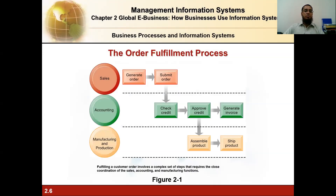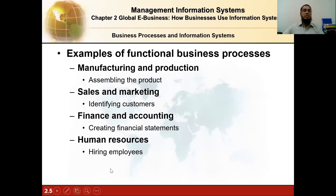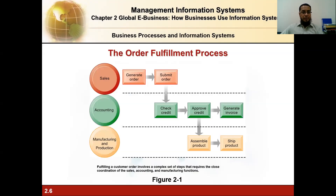In figure 2.1, fulfilling a customer order involves a complex set of steps requiring close coordination of sales, accounting, and manufacturing functions. Using information systems, we can bring efficiency into all these areas.